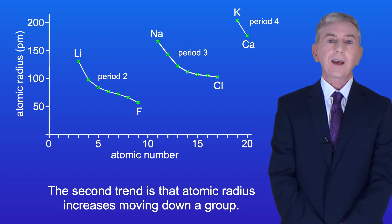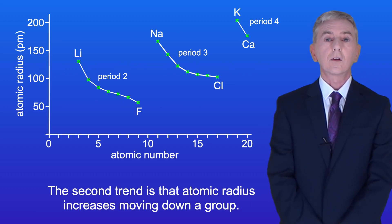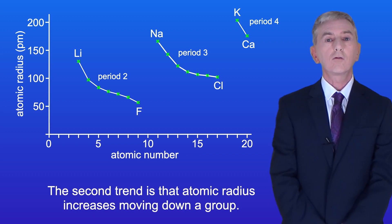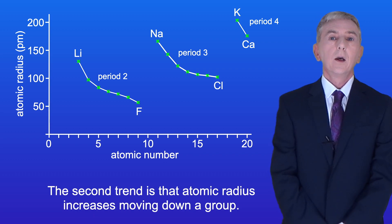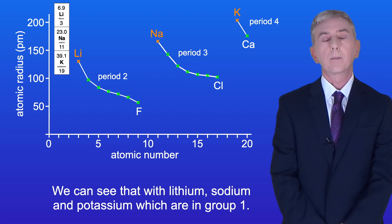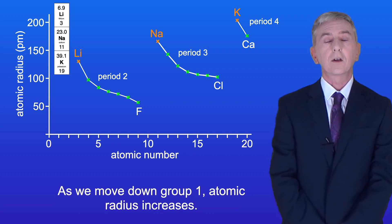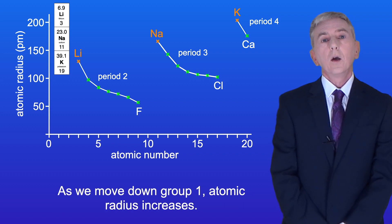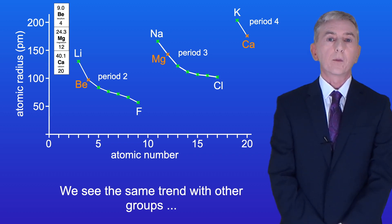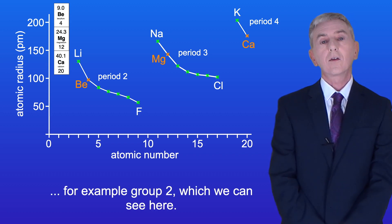The second trend is that atomic radius increases moving down a group. We can see that with lithium, sodium and potassium, which are in group one — as we move down group one, atomic radius increases. We see the same trend with other groups, for example group two, which we can see here.